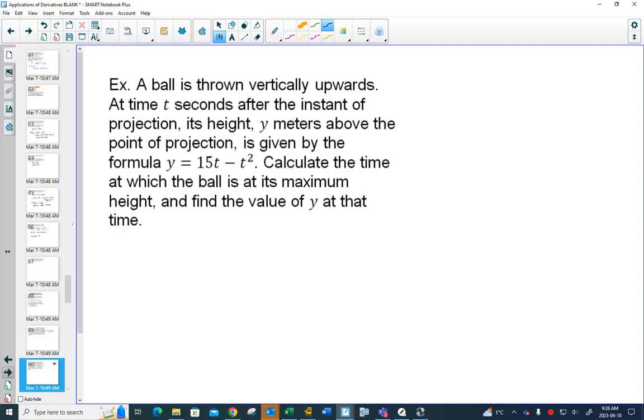A ball is thrown vertically upwards. We've got a formula which tells us right away that this is not thrown on this earth, because if you actually found the second derivative for acceleration, the acceleration would be minus 2 instead of minus 9.8. But that's all right, we can still imagine we're on some different planet with different gravitation, and this ball was thrown up in the air. Calculate when it's at the maximum and find the value of y at that time.